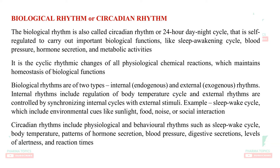The biological rhythm is also called circadian rhythm, which is a 24-hour day-night cycle. It is essential to carry out the sleep-awakening cycle, maintenance of blood pressure, hormone secretion, and metabolic activities. It is the set of cyclic rhythm exchanges of all physiological functions and chemical reactions that maintain homeostasis for the biological functioning of the body. The biological rhythm is of two types: internal (endogenous) and external.